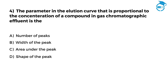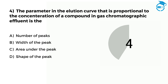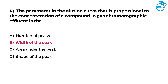Option A: Number of peaks. Option B: Width of the peak. Option C: Area under the peak. Option D: Shape of the peak. Mention your answer in the comments — your time starts now. The right option is B, that is width of the peak.